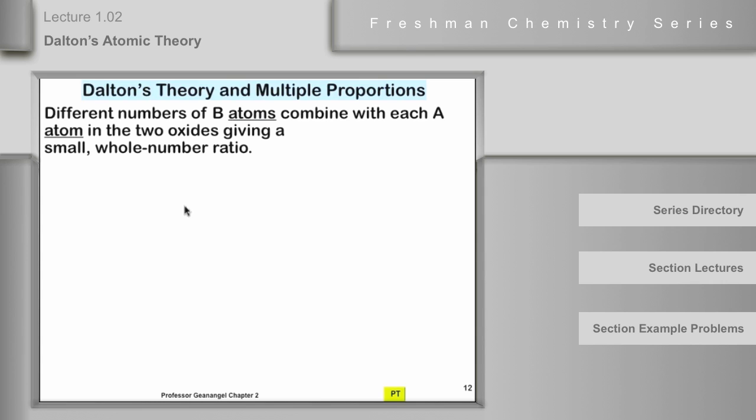What about the law of multiple proportions? How do we handle that? Again, we're thinking about compounds of atoms A and B and elements A and B and cases where there's more than one A-B compound. Two or more. In that case, the easiest way to imagine this is that the ratio of atoms in the different compounds is different.